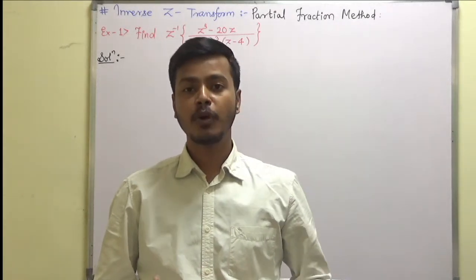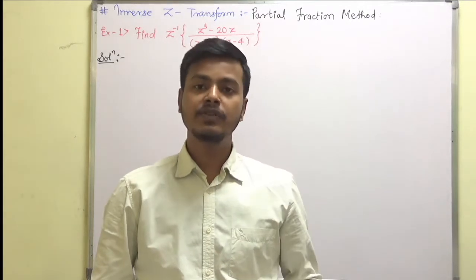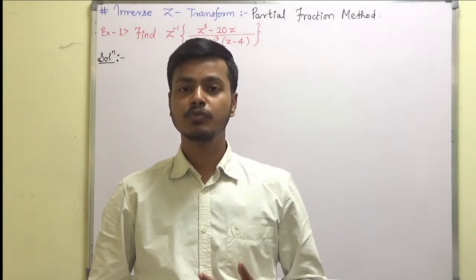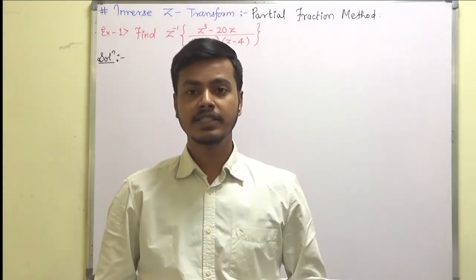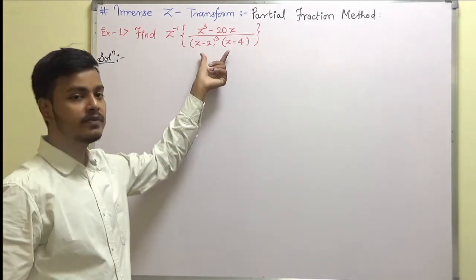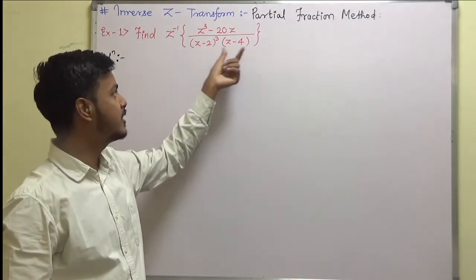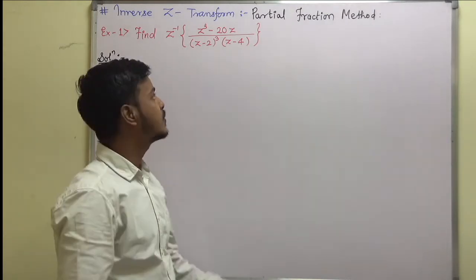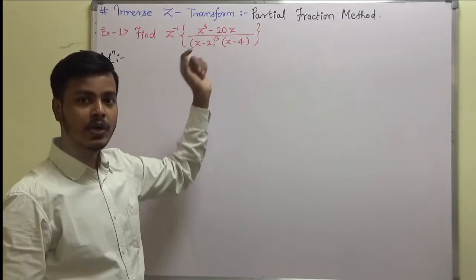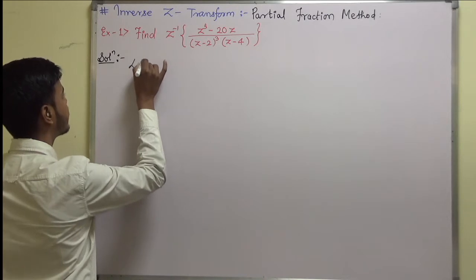In this video we are going to take more problems on the partial fraction method. In the last learning video we already took two problems on it, and here we are taking two more problems. So let us start with this problem: find the Z-inverse of (z³ - 20z) upon (z - 2)³ into (z - 4). Let us consider this to be f(z) and try to replace this complex fraction in terms of partial fractions.